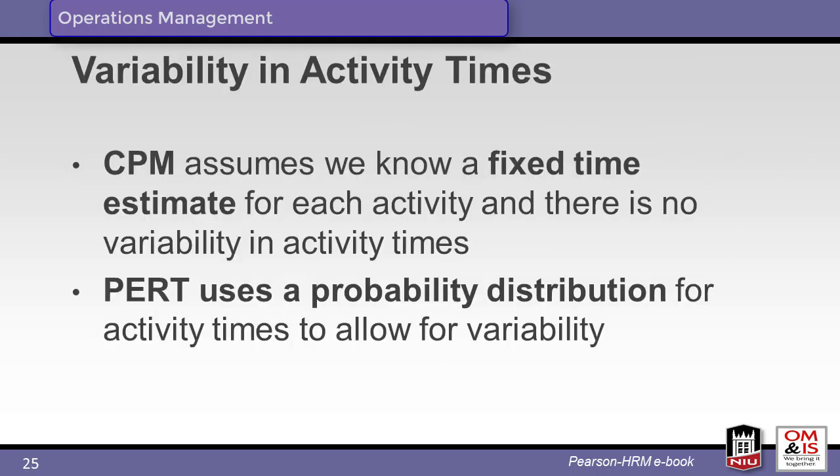Seasoned project managers know that duration times are simply estimates and may not always reflect reality. The CPM model assumes that estimates are accurate, while the PERT model assumes that variability exists in the activity durations.